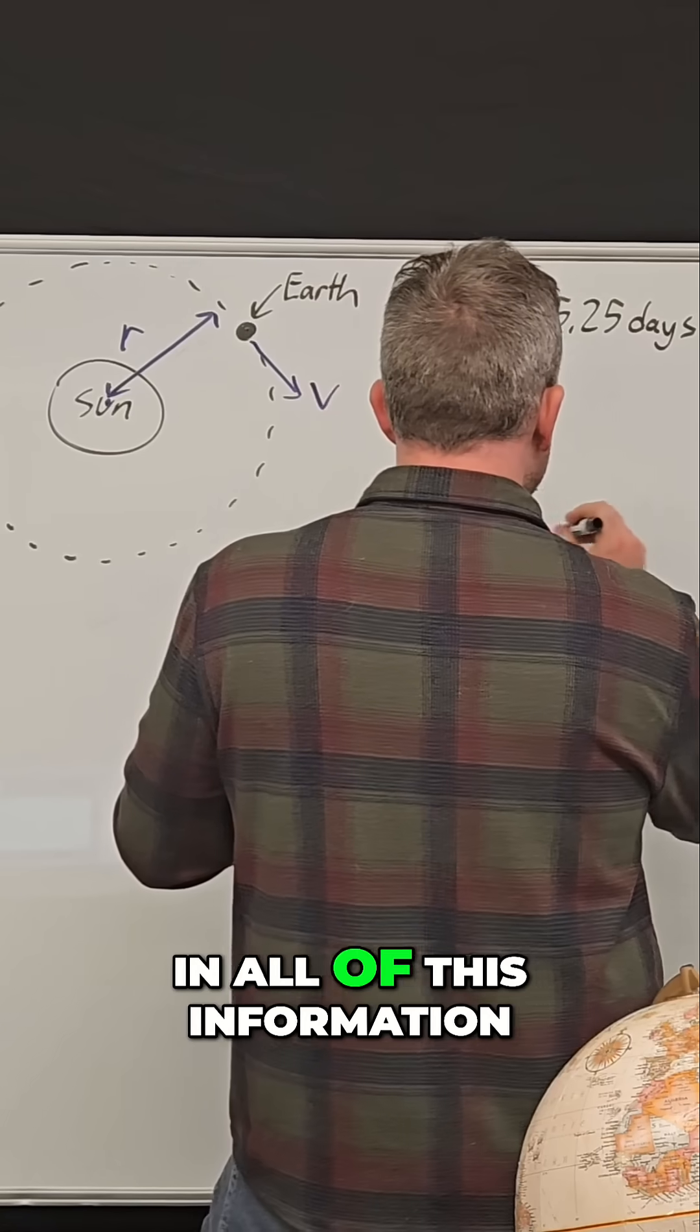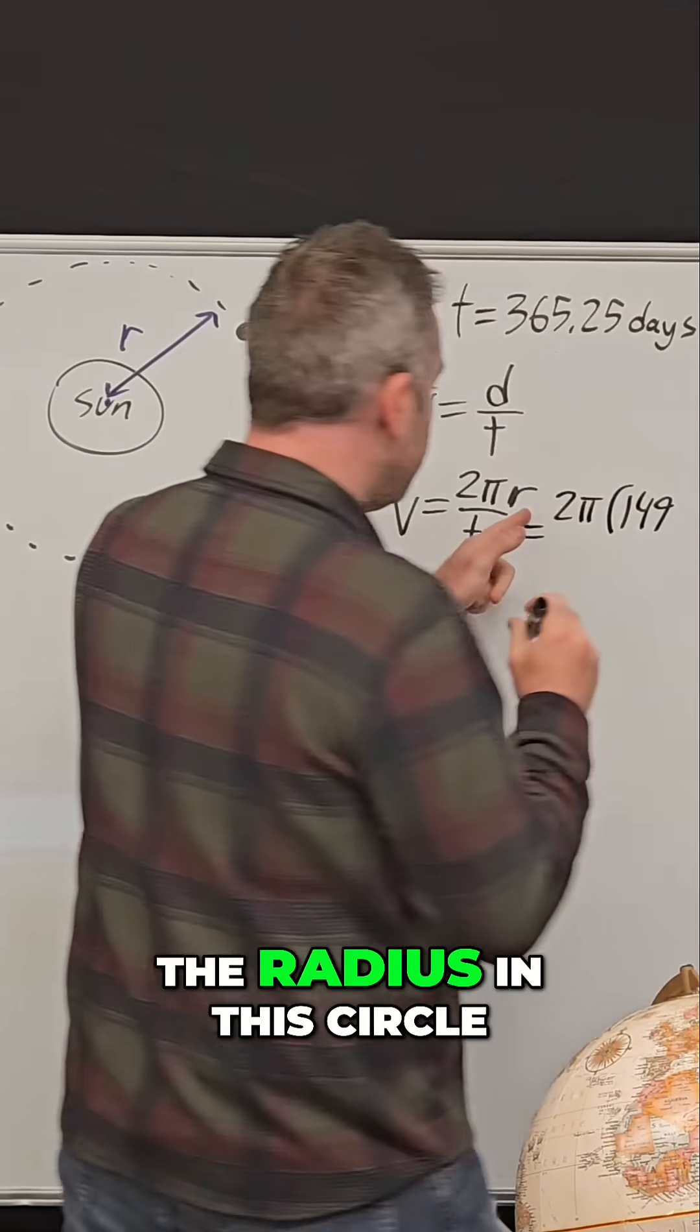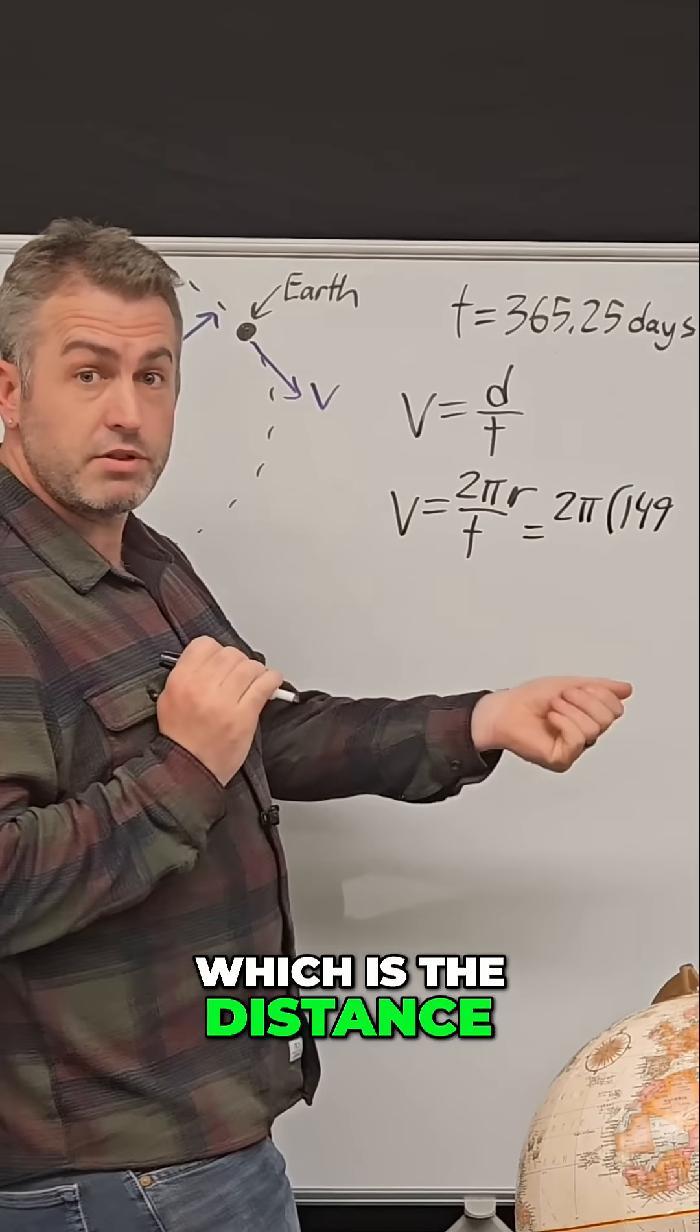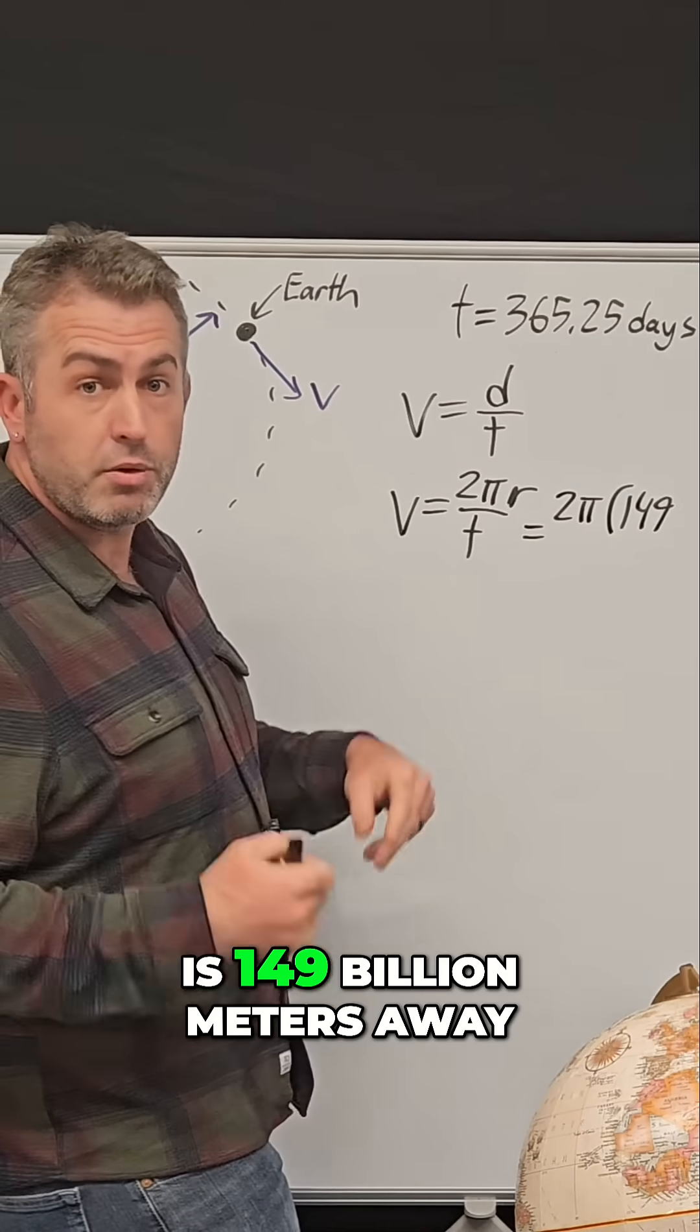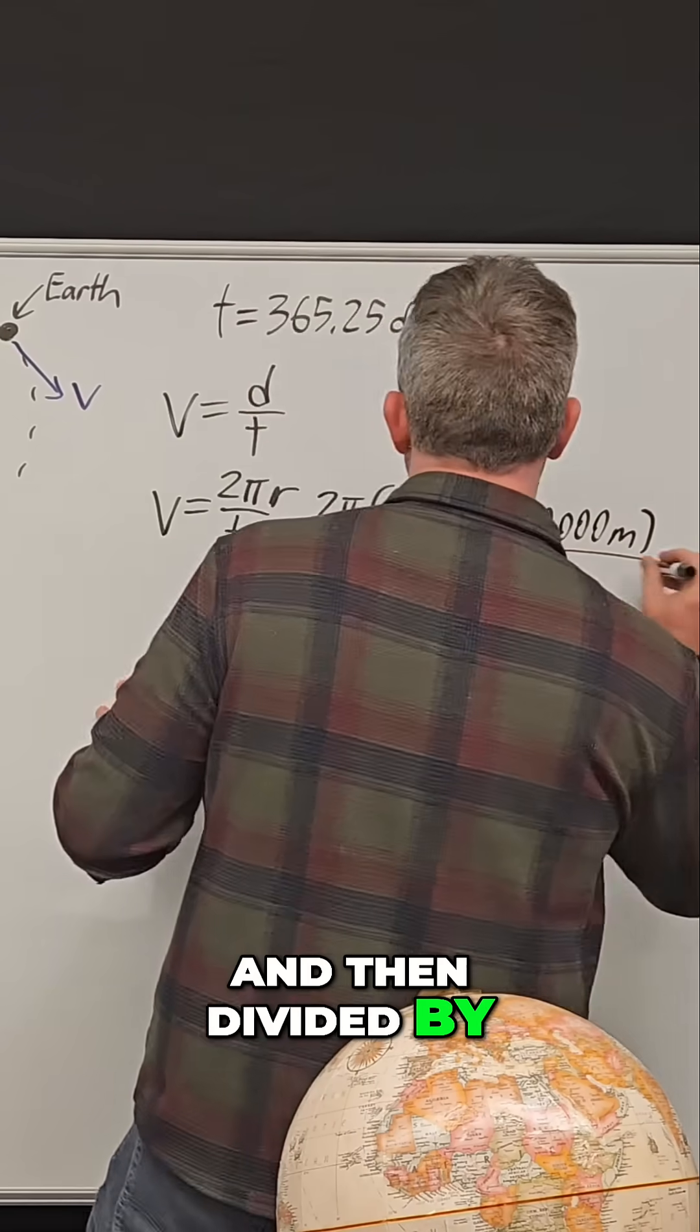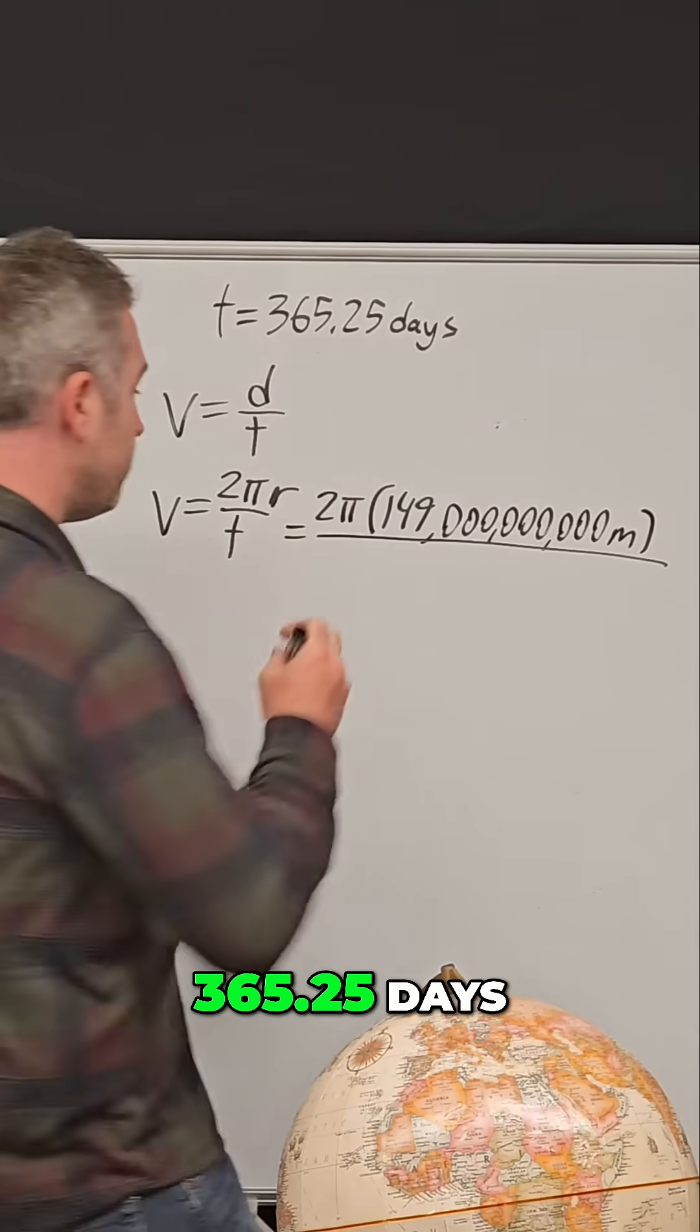So if we plug in all of this information, remember the radius in this circle, which is the distance from the Earth to the sun, is 149 billion meters away. And then divided by 365.25 days.